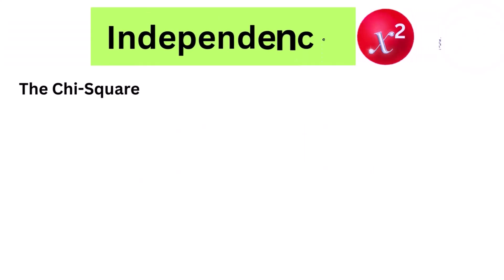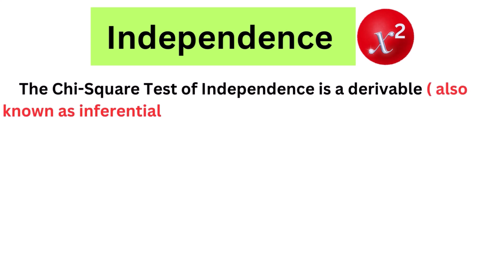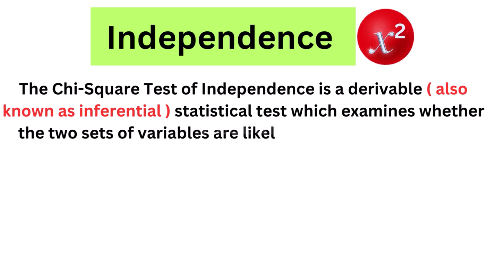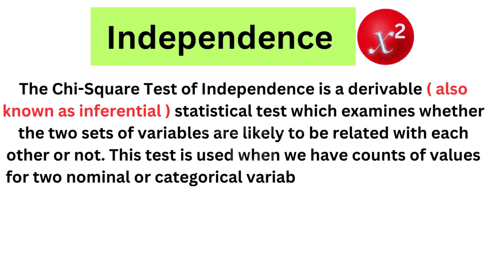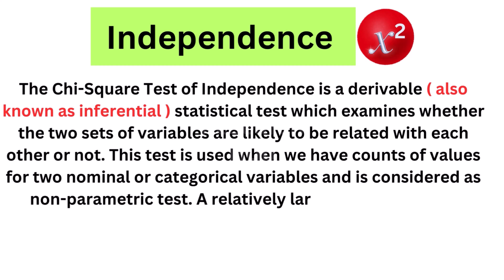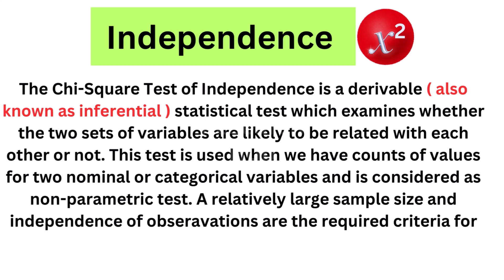Independence. The chi-squared test of independence is a derivable, also known as inferential, statistical test which examines whether the two sets of variables are likely to be related with each other or not. This test is used when we have counts of values for two nominal or categorical variables and is considered as non-parametric test. A relatively large sample size and independence of observations are the required criteria for conducting this test.